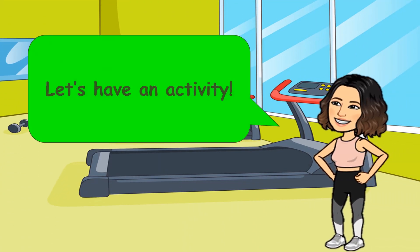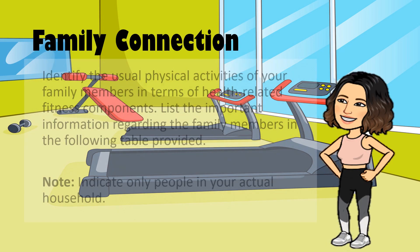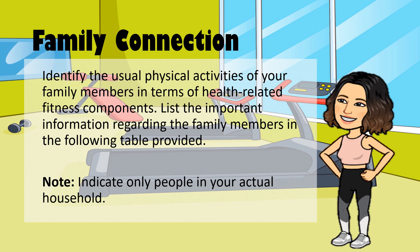Let's Have an Activity — Family Connection. Identify the usual physical activities of your family members in terms of health-related fitness components. List the important information regarding the family members in the following table provided. Note: indicate only people in your actual household.